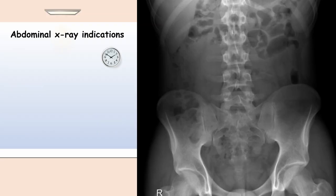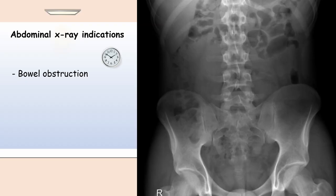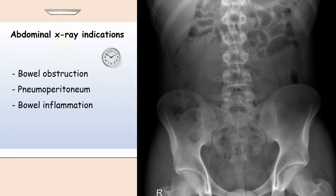So when might an abdominal x-ray be useful? One of their best uses is to identify bowel obstruction - a blockage in the lumen of the small or large bowel with many causes. A pneumoperitoneum, meaning free air in the abdominal cavity, can also be identified. Bowel inflammation in the context of inflammatory bowel disease is a less common indication, and abdominal x-rays can also be a good way of identifying foreign bodies.